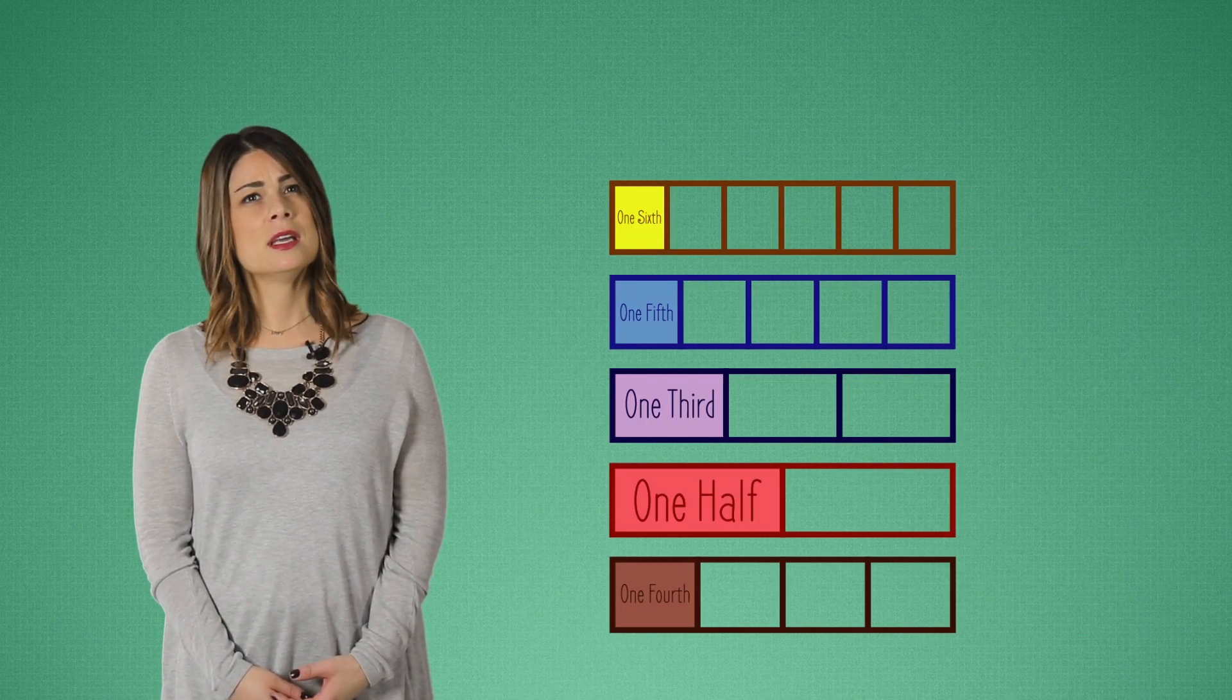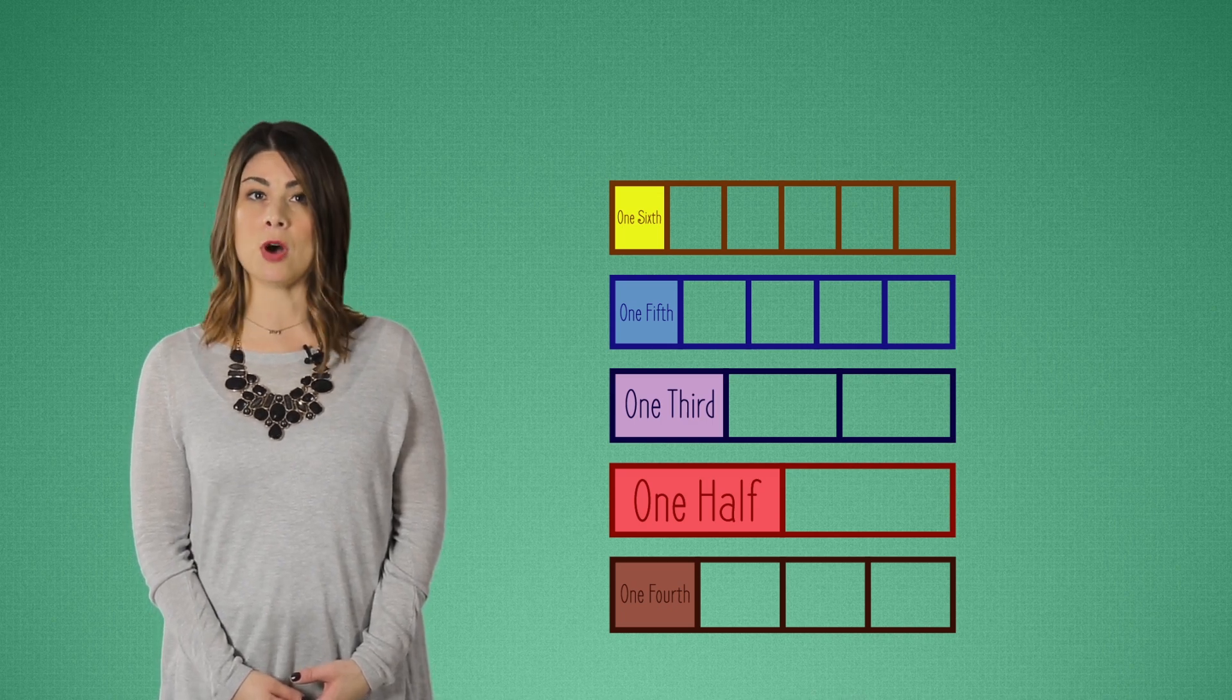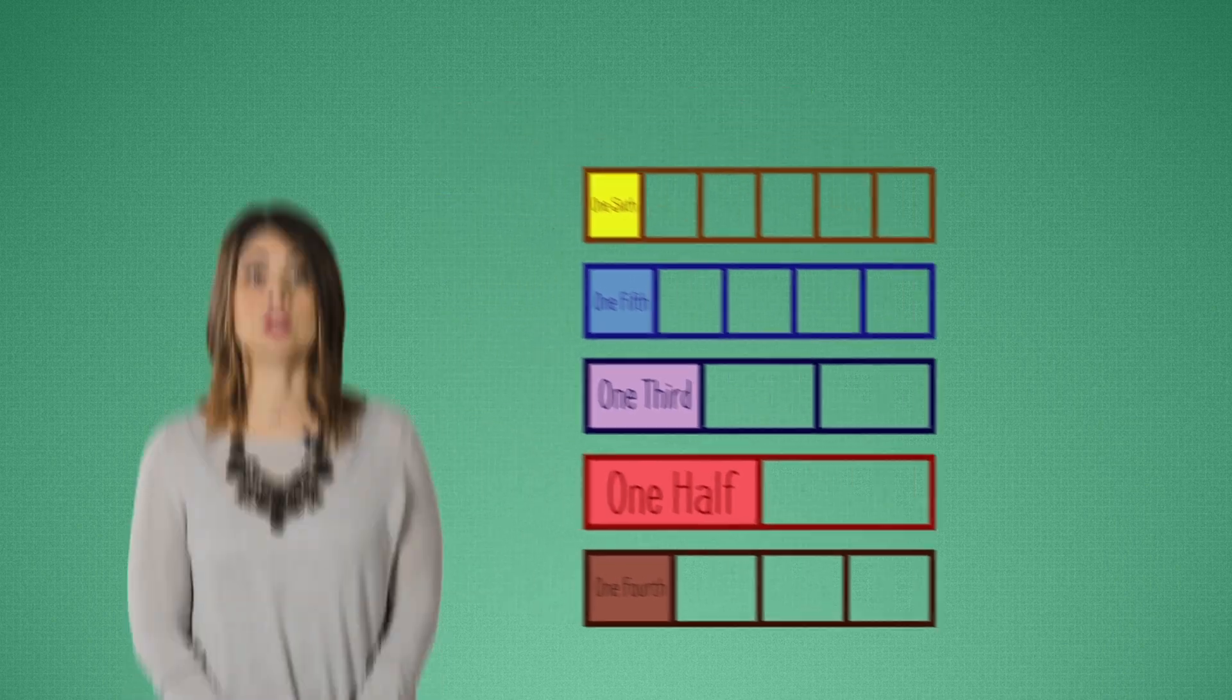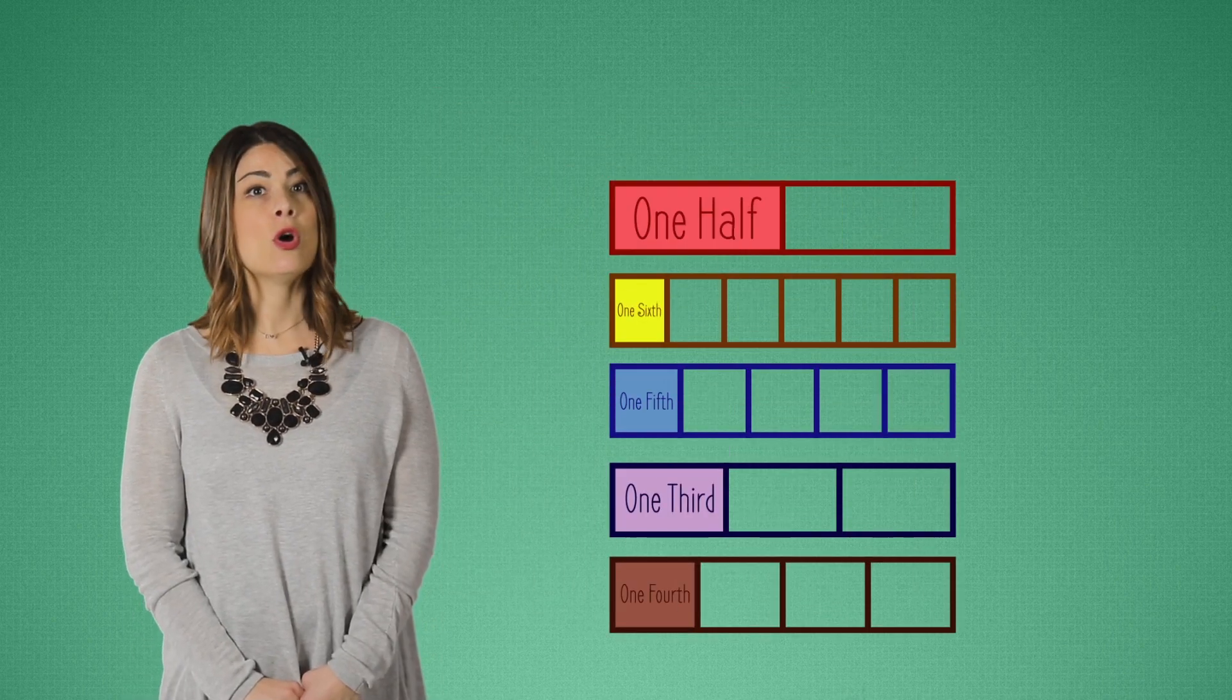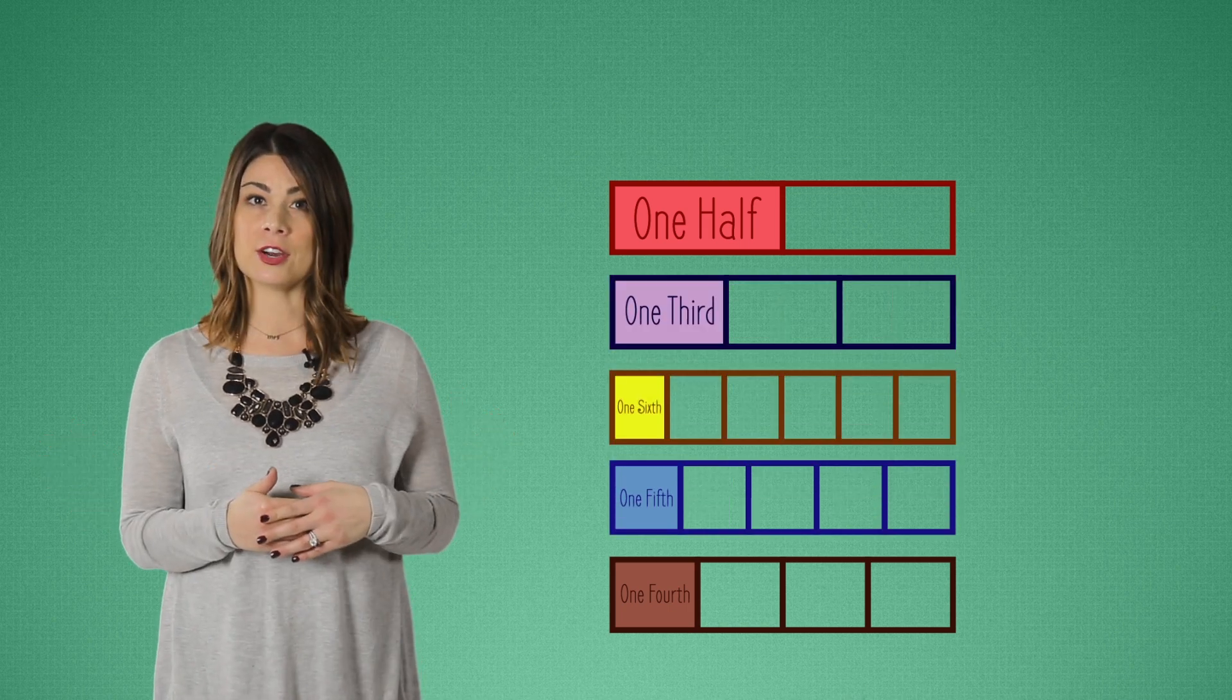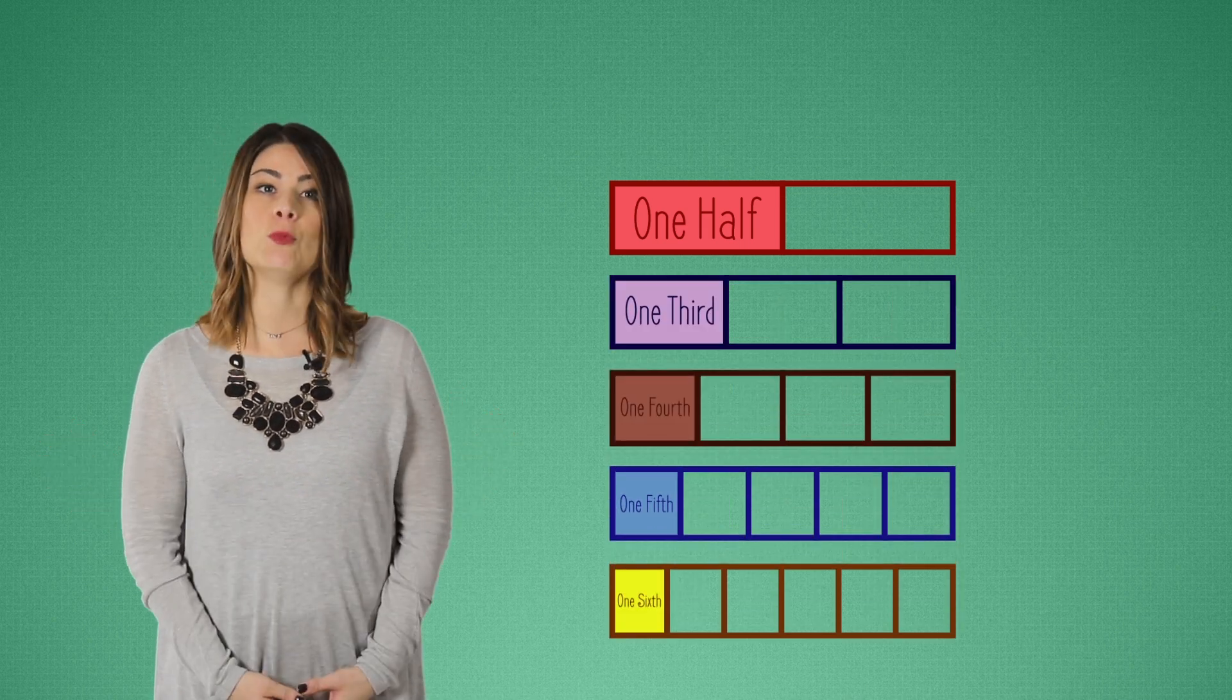How about these strips? Can you arrange them in order from largest unit to smallest unit? The largest is one half. Only two pieces means each piece is large. Then one third, one fourth, one fifth, and one sixth.